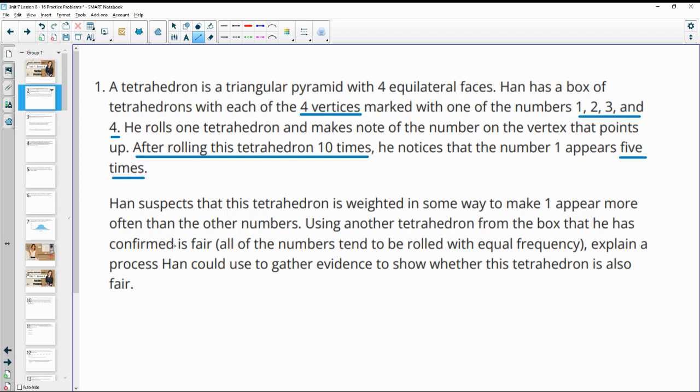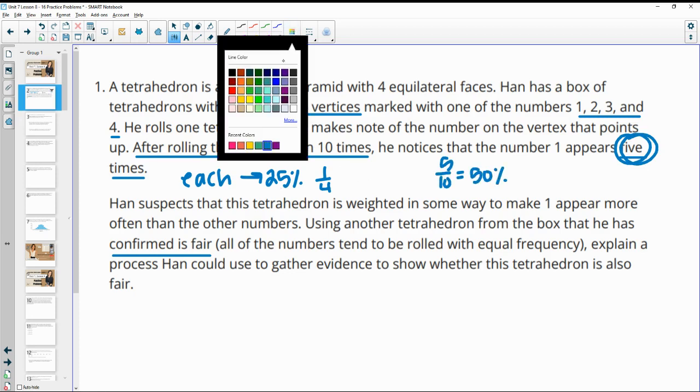After rolling this tetrahedron 10 times, he notices that the number 1 appears 5 times. He suspects that this tetrahedron is weighted in some way to make the 1 appear more often than the other numbers. There's four vertices, so each one should happen 25% of the time or one-fourth. And 25% of 10 is 2.5, but his appeared five times. 5 out of 10 is 50% of the time, so that's double what we would expect.